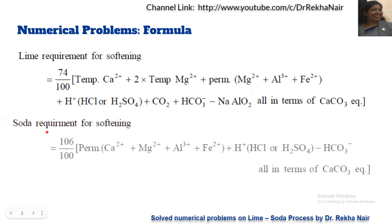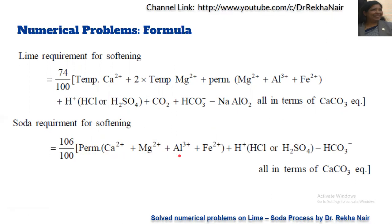Soda requirement = (106/100) × (permanent calcium + magnesium + aluminium + iron + H⁺ − HCO₃⁻), all in terms of CaCO₃ equivalent. There are no temporary compounds in the soda formula — temporary hardness is not included. Only permanent hardness is considered.